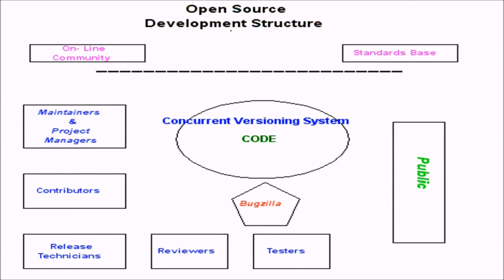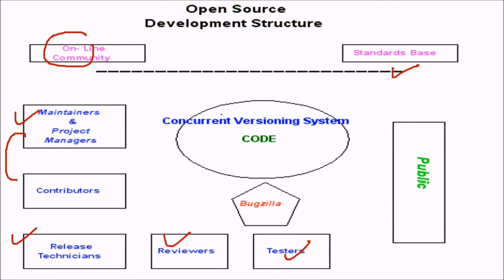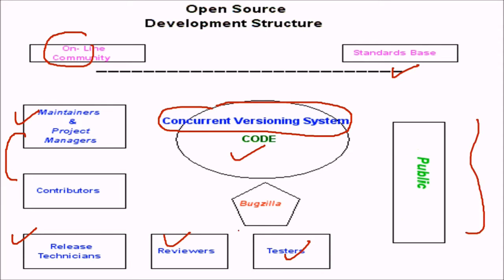In open source development software, we have an online community with a standard base. In this we have maintainers, project managers, contributors, release technicians, reviewers, and testers. There is also some concurrent version control system going on in the core, and this is where the public interacts.